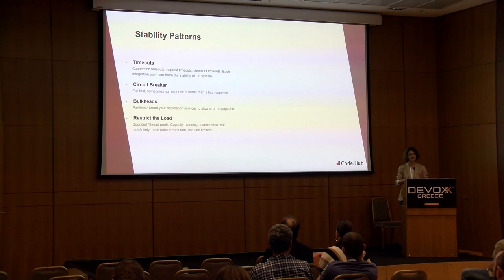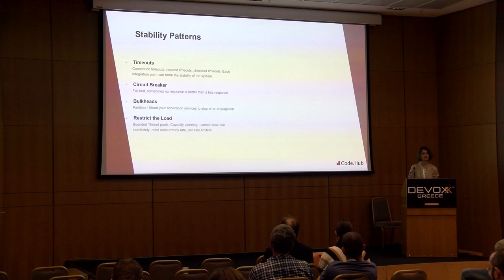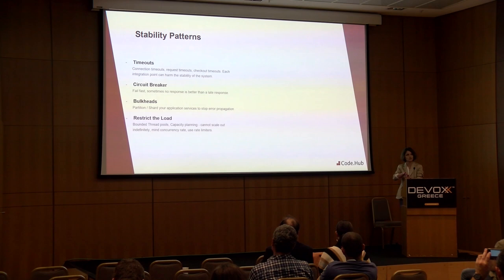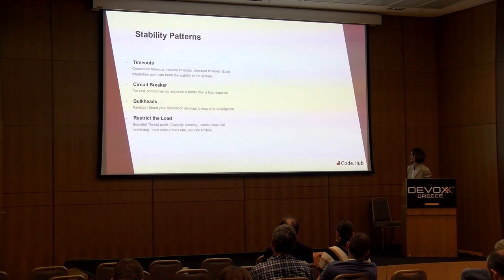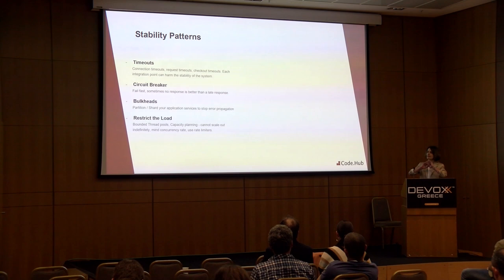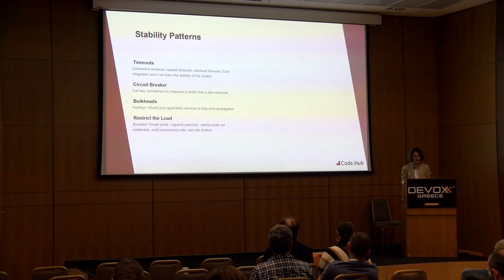Bulkheads: similar to the ship analogy, in applications this is partitioning or sharding based on functionality. You have different shards with different capacity, which allows you to isolate the impact of a failure — if one shard maxes out, your other critical functionality remains untouched. Restrict the load: it is very important to have bounded thread pools and to do proper capacity planning. We cannot scale out indefinitely — scale out is about how your algorithm and software are able to parallelize things, not just adding more VMs or pods. Use rate limiters, not only at the API gateway but internally for your APIs as well.